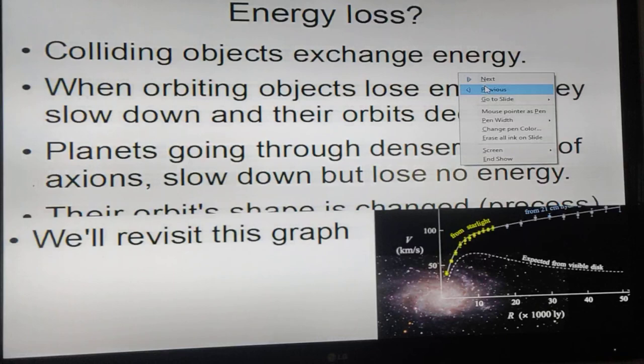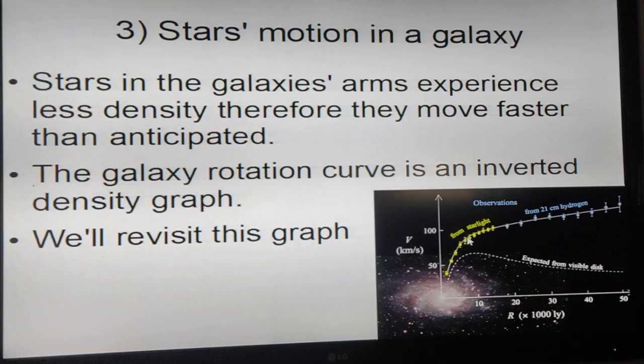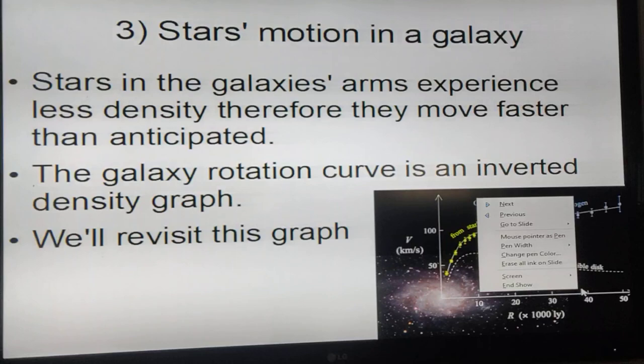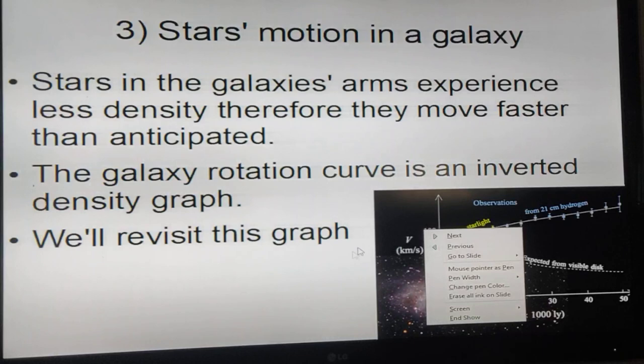If you look at this curve, the galaxy rotation curve, it's basically a density graph that tells us as you move away from the center of the galaxy, the density of space decreases. We'll see this graph again.